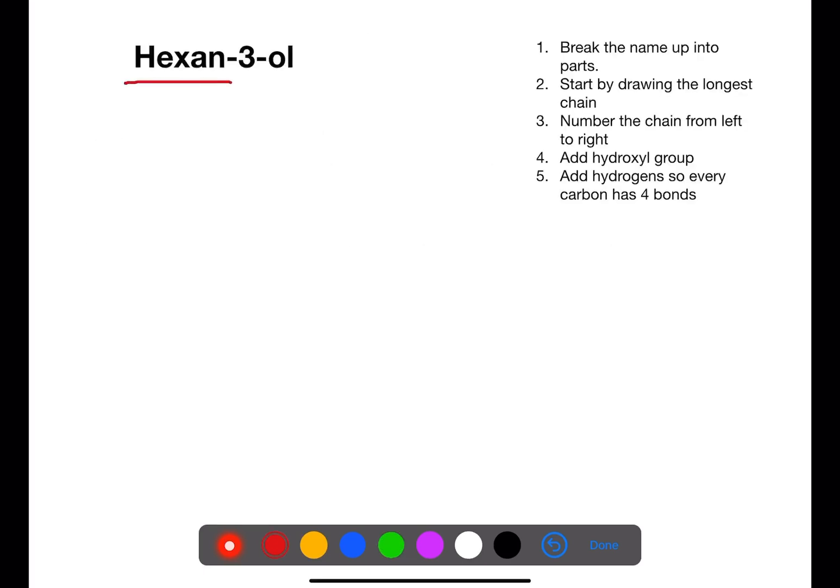So here we have hexan-3-ol. This means that we have six carbons. If we number from left to right, we can then put our OH group on number three and then fill in the rest so that each carbon has four bonds.